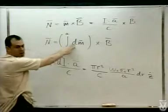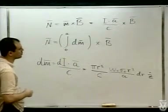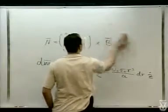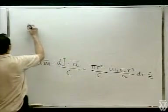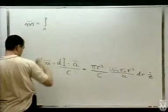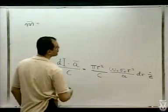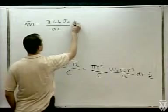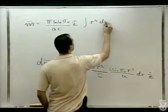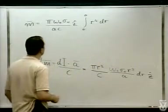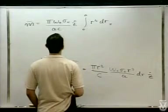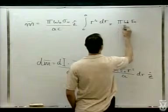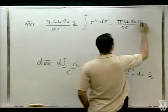M = ∫₀ᴬ dM = π אומגה-אפס סיגמה-אפס/(AC) × כיוון Z × ∫₀ᴬ R⁴ dR = π אומגה-אפס סיגמה-אפס/(AC) × A⁵/5 × ẑ. כלומר: M = π אומגה-אפס סיגמה-אפס A⁴/(5C) ẑ.